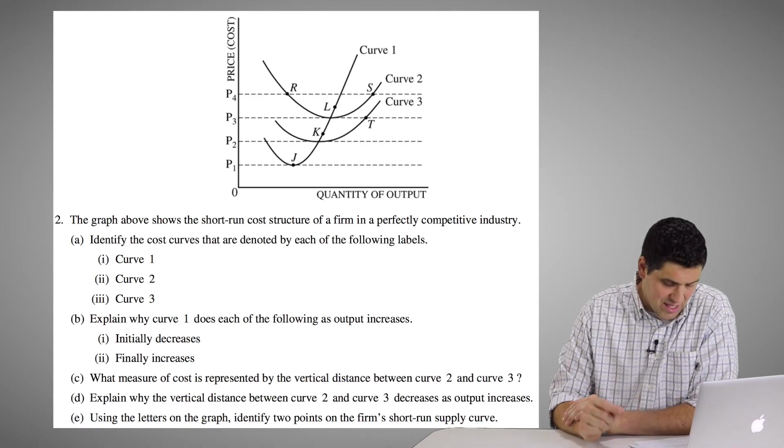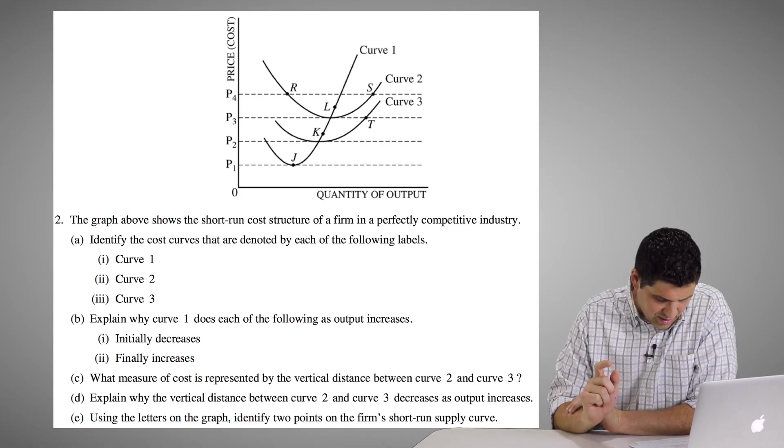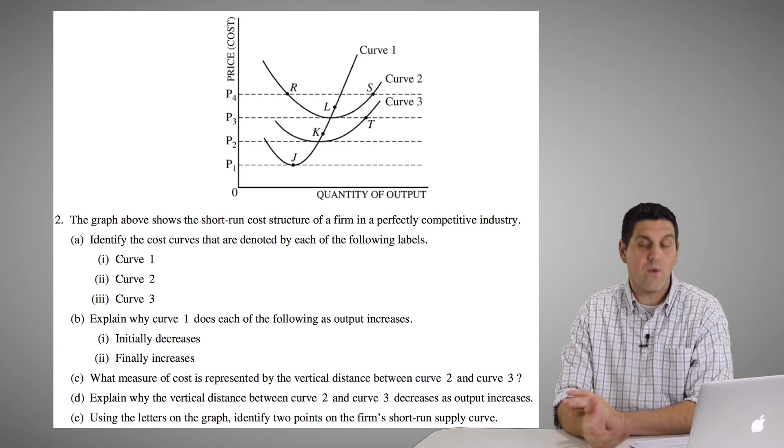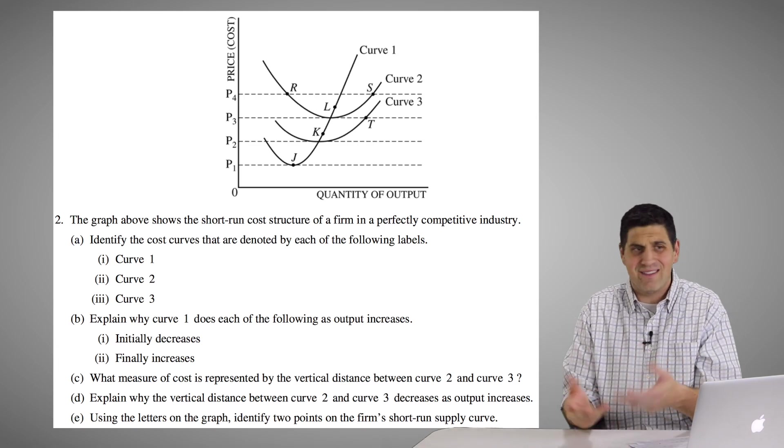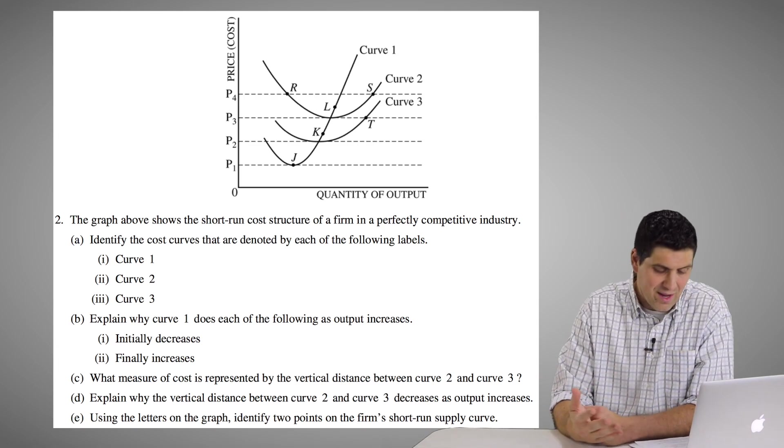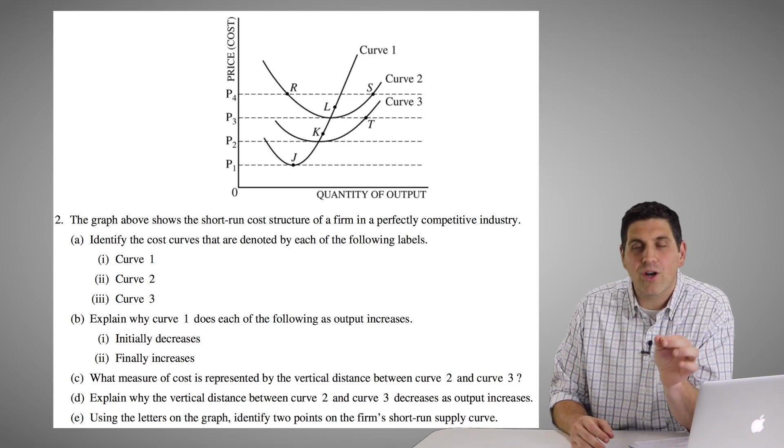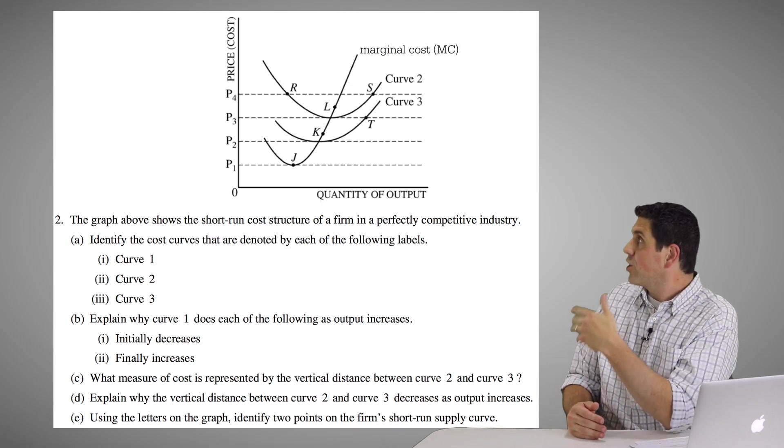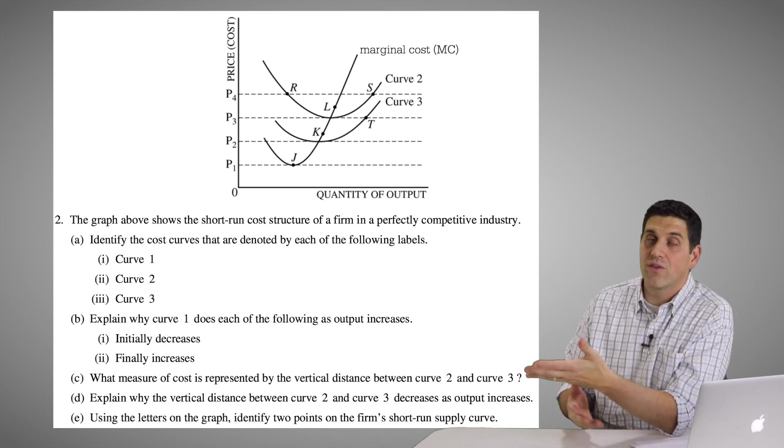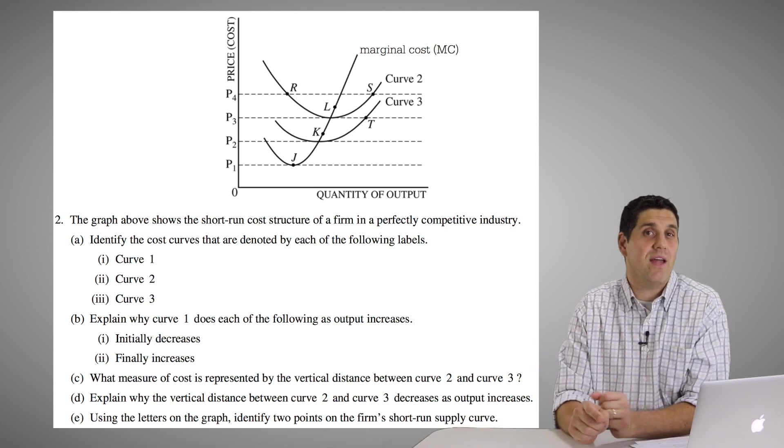And finally, the last question in E is identify the letters that represent the short run supply curve. So if you don't know what that is, I don't know, no clue, it's either RSLKJ, I don't know. The short run supply curve is the marginal cost curve. So curve one is the marginal cost curve, but not all of it. Remember the idea of the shutdown rule?